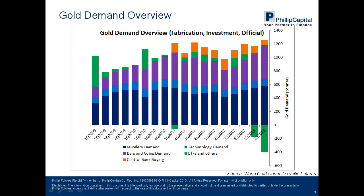Central banks only recently became net buyers of gold in 2011. Prior to that, they were net sellers of gold, contributing to supply instead of demand. The largest demand sector is fabrication demand, contributing to more than half of total demand, whereas the most volatile demand is investment demand. As investment demand is the most variable portion of gold demand, changes in investment demand are most closely tied to gold prices.